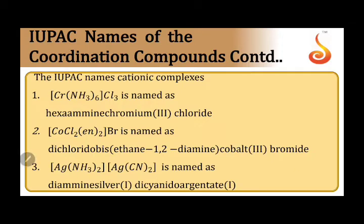Now let's look at the nomenclature of coordination compounds when the formula is given. Let's identify which is the cationic and anionic part. The coordination sphere written on the left hand side indicates that this is the cationic complex; this is the cationic part and this is the anionic part.